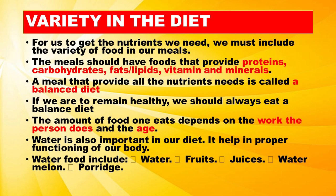The amount of food one eats depends on the work the person does and their age. Water is also important in our diet. It helps in the proper functioning of our body. Water-rich foods include water, fruits, juices, watermelon, and porridge.